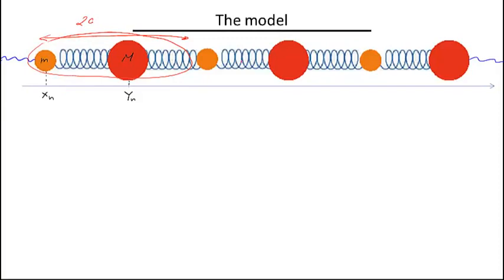For simplicity, I will be measuring distances in units of the elementary cell size, so I will essentially set 2a equal to 1. So a is basically the equilibrium length of the spring, and 2a represents the discrete symmetry in my problem — if I translate everything by 2a, I recover my crystal. I'm going to use units where 2a is set to 1.